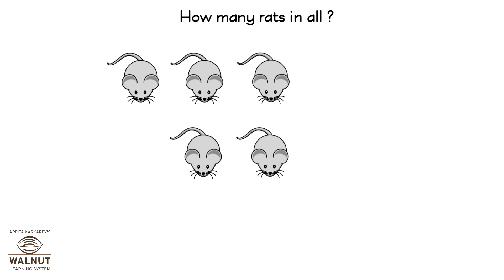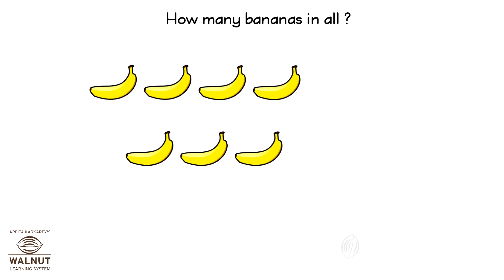How many rats in all? Three rats and two rats is five rats. How many bananas in all? Four bananas and three bananas is seven bananas.